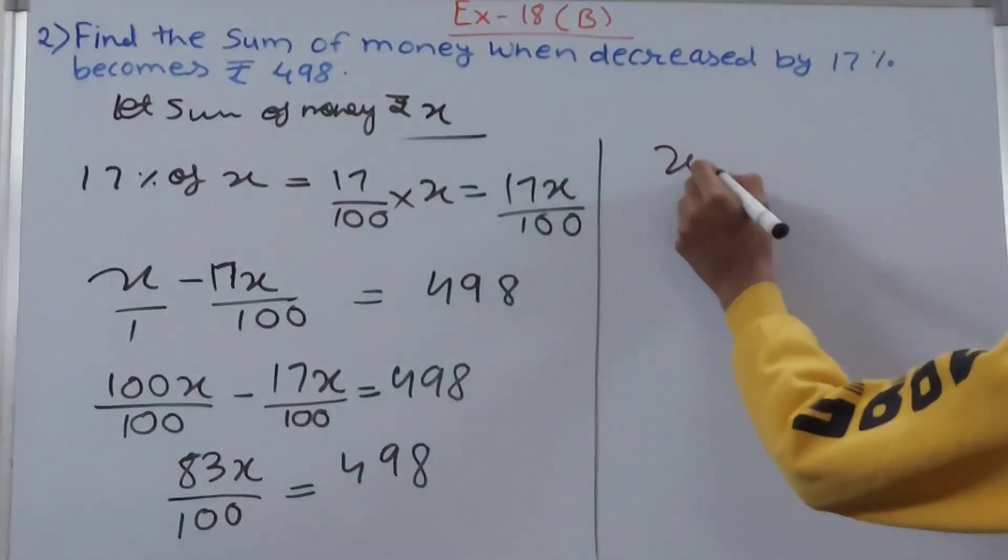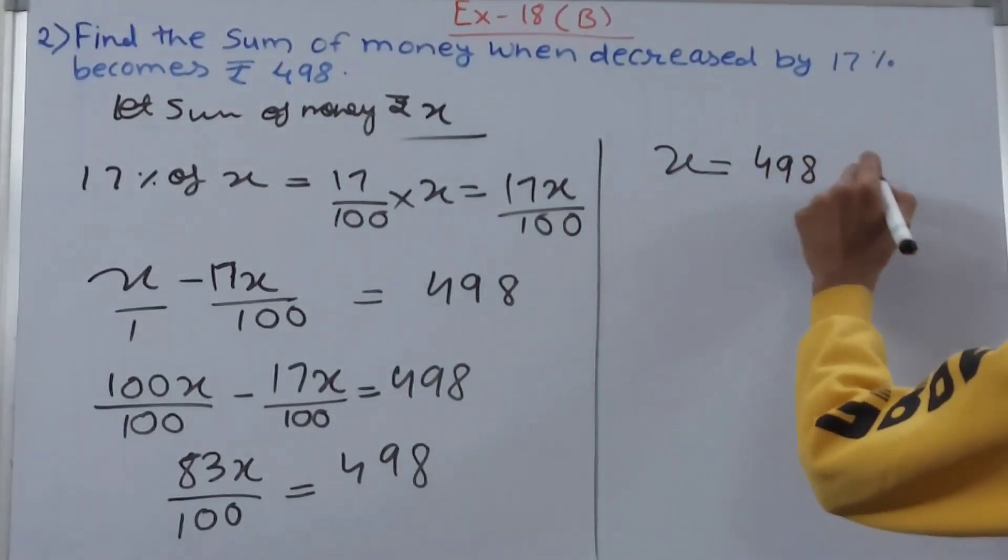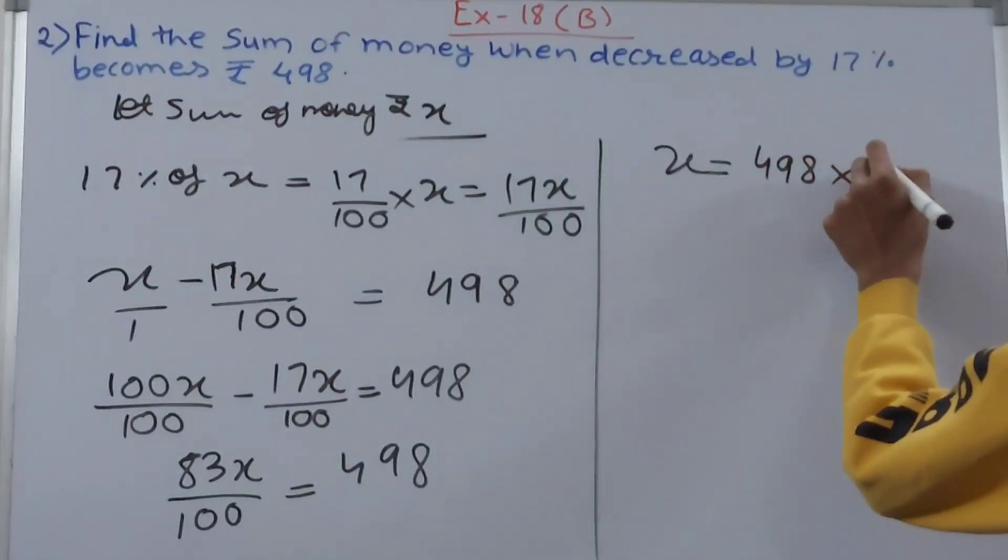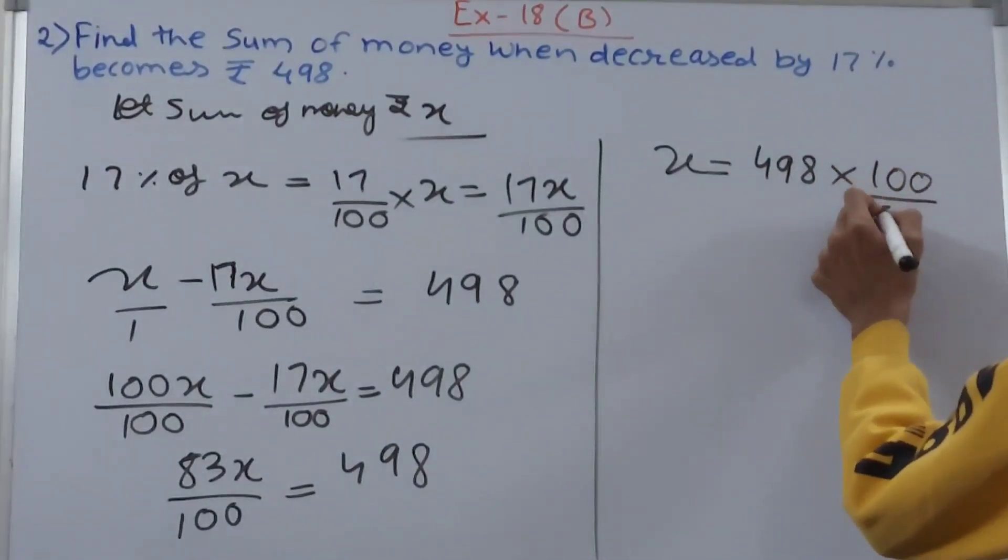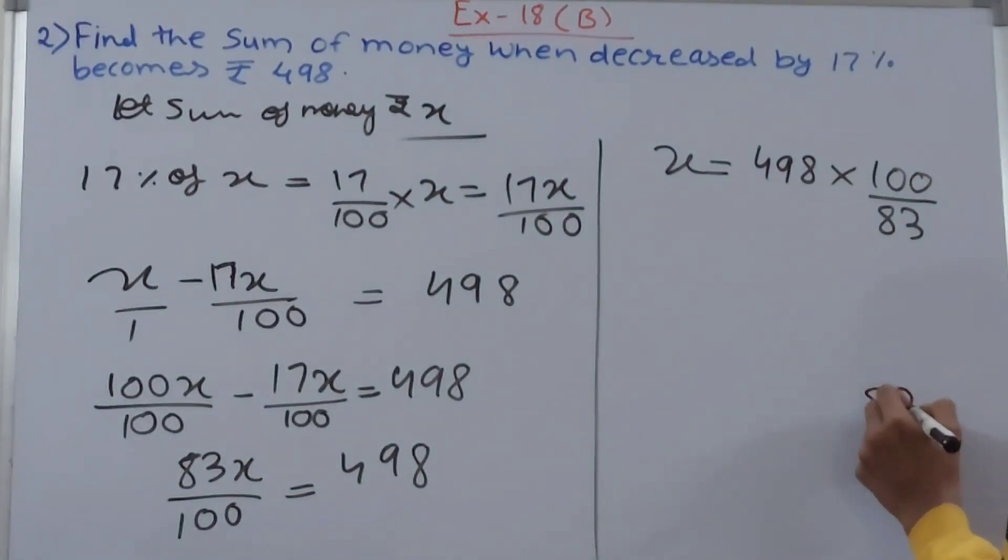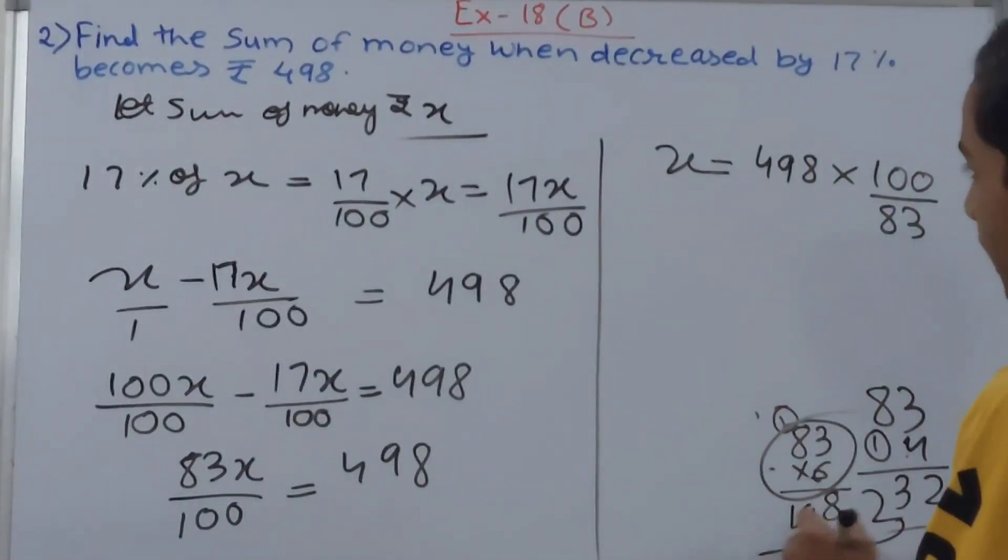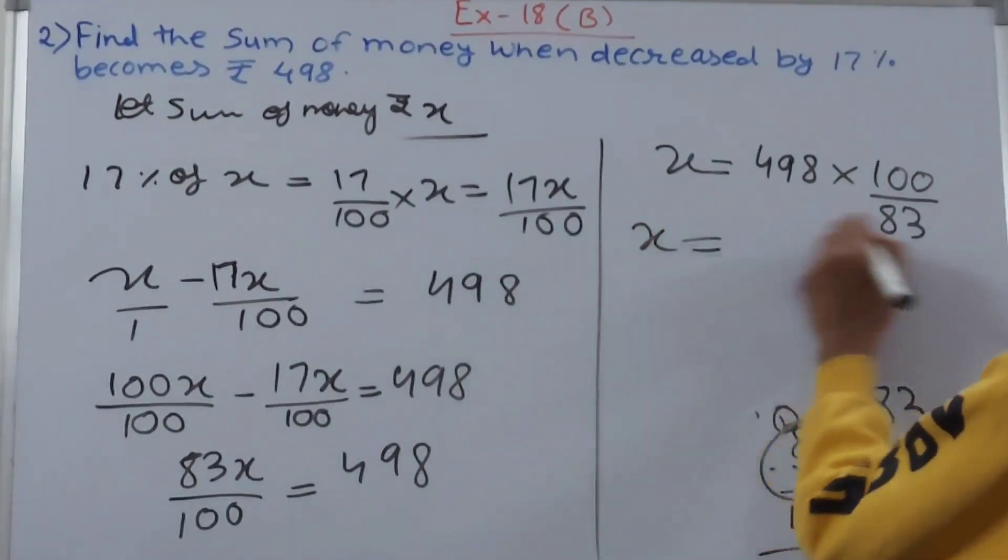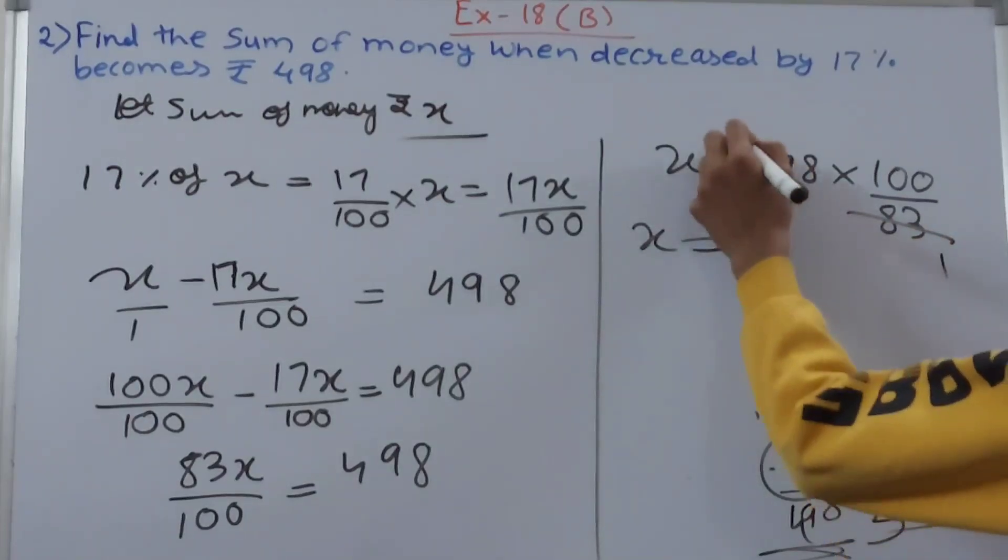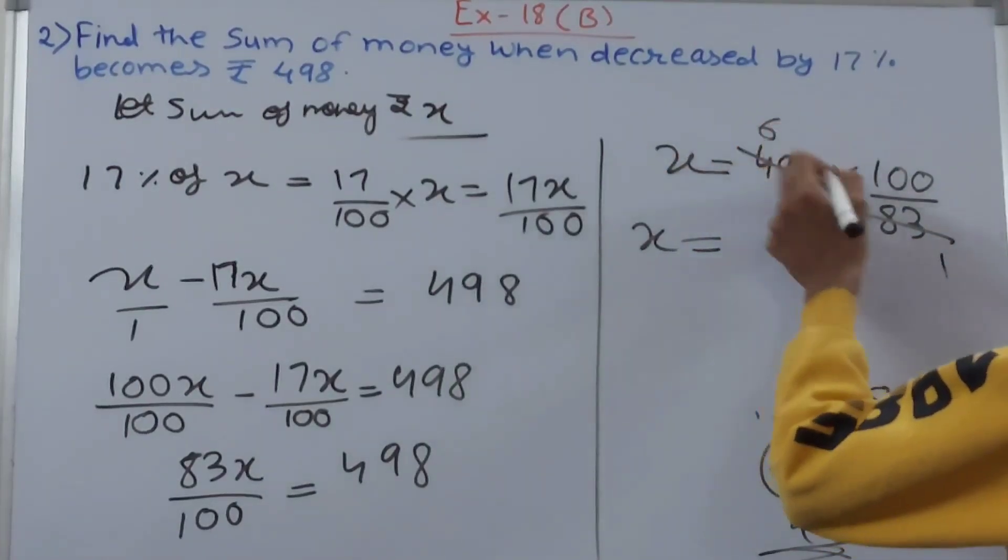Let's check if it is divisible. 83 into 6 becomes 498. So x equals—cancel this—6 into 100 becomes 600. This means our answer becomes ₹600.